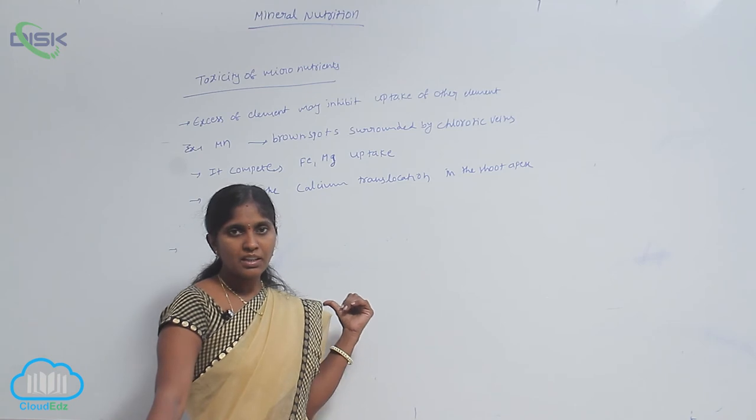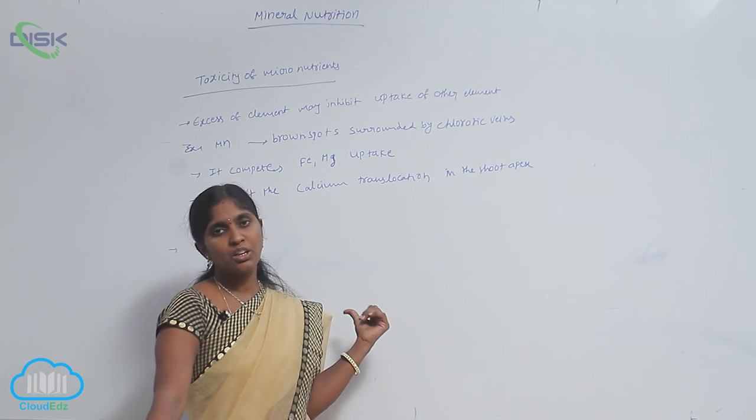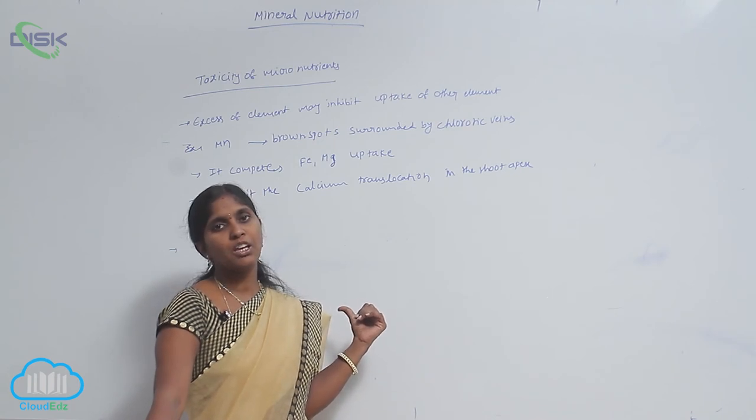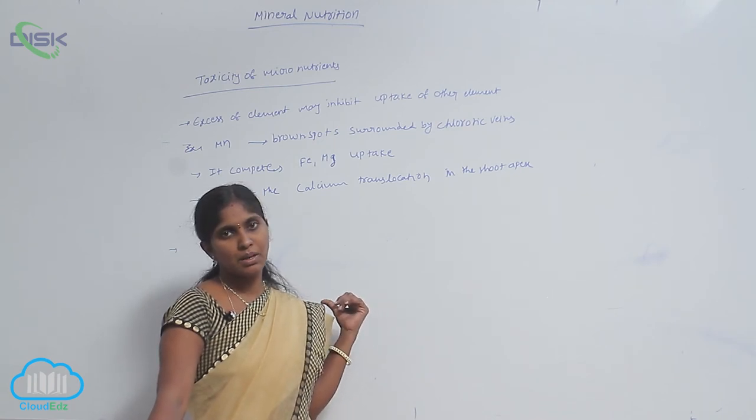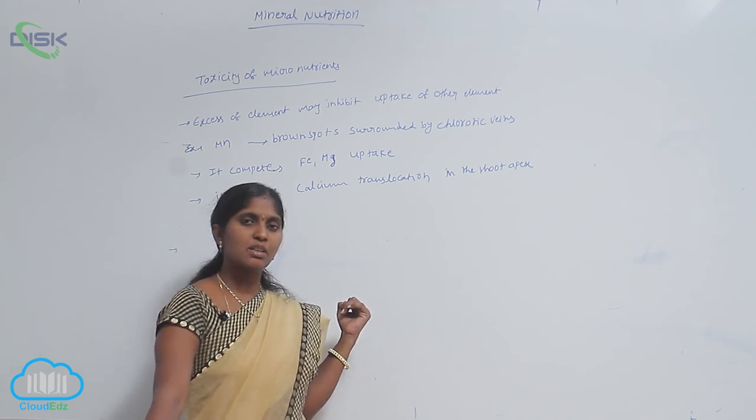In this case, manganese toxicity causes inhibition of the uptake of iron as well as magnesium ions and calcium ions.